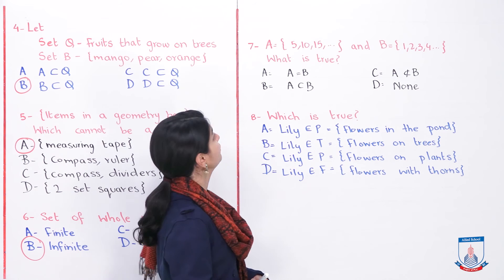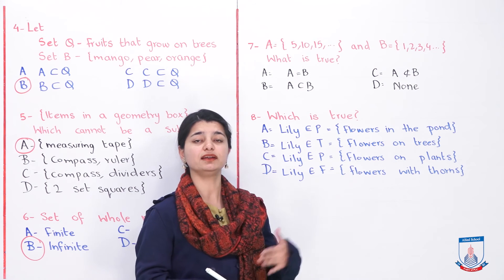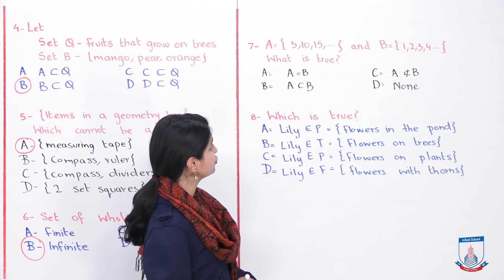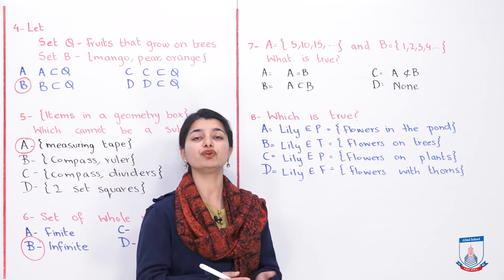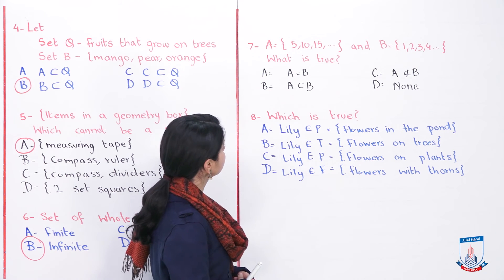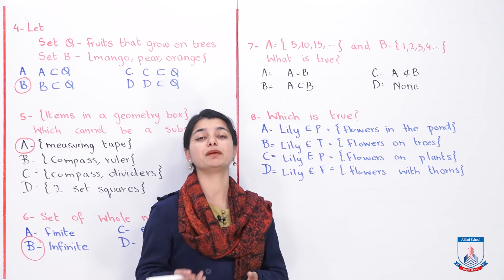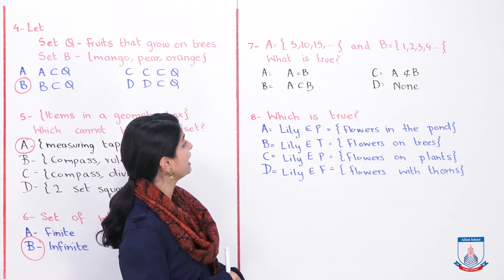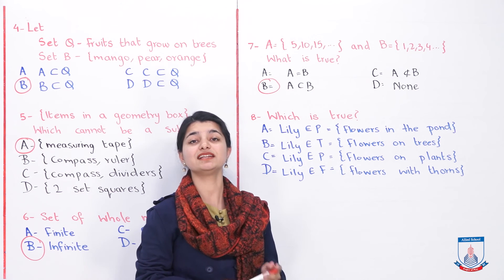MCQ 7: Set A = {5, 10, 15, 20, ...} continuing to infinity, and Set B = {1, 2, 3, 4, ...} continuing to infinity. We must identify the true statement. A is not equal to B because equal sets require the same elements — one has all multiples of 5, the other has all natural numbers. Option C says A is not a subset of B, but 5, 10, 15, 20 are all natural numbers, so A is indeed a subset. Option B — A is a proper subset of B — is correct, because all elements of A are part of B, while B also contains numbers like 8, 9, 11, 12 that are not in A.